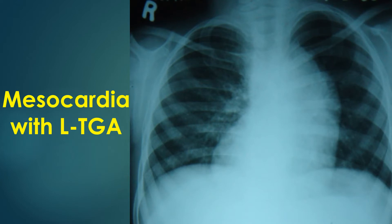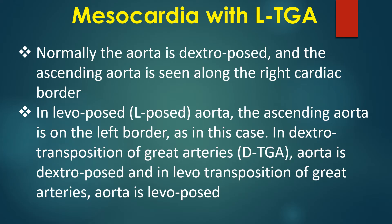Mesocardia means a centrally located heart. In levocardia, the heart is predominantly in the left hemithorax and the apex points to the left. In dextrocardia, the heart is predominantly in the right hemithorax and the apex points to the right. Normally, the aorta is dextroposed and the ascending aorta is seen along the right cardiac border.